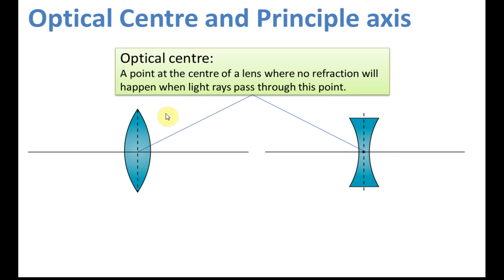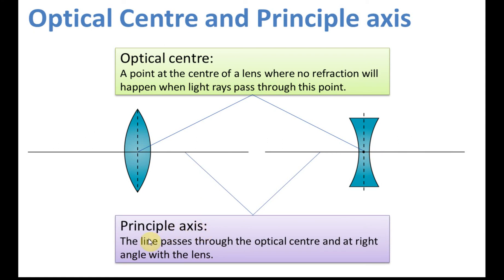For the optical center, all light rays that pass through it will not be refracted. So the optical center is a point at the center of a lens where no refraction will happen when a light ray passes through it. The second term is the principal axis — this line is the principal axis. It is the line that passes through the optical center and is at a right angle, perpendicular at 90 degrees, to the lens.